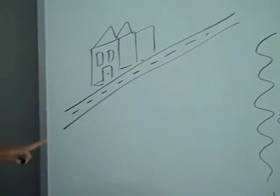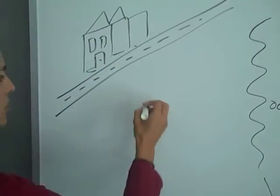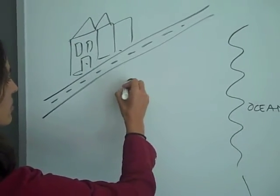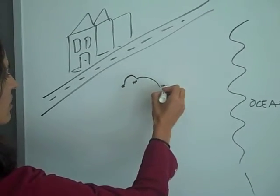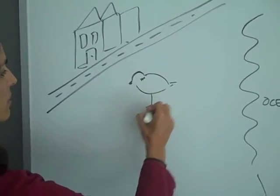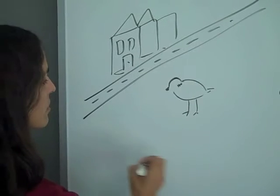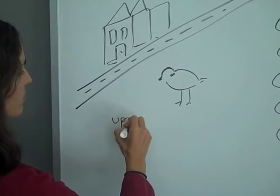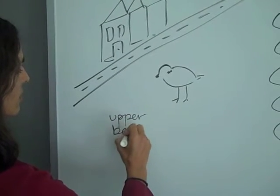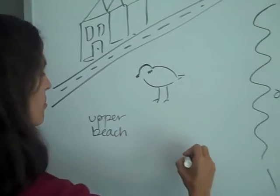So, between this wedge of habitat, we'd have our plover. This is like a giant plover in relation to its habitat, but that's okay. So, this is Upper Beach, and this is the rack line.